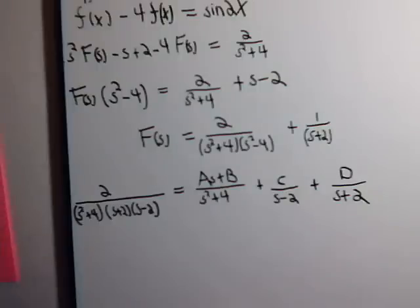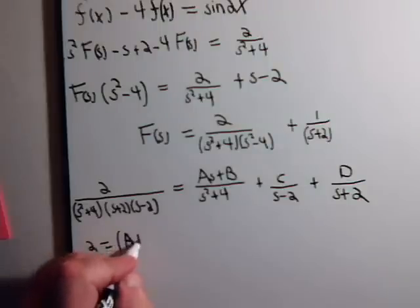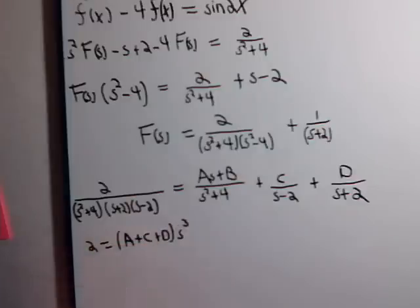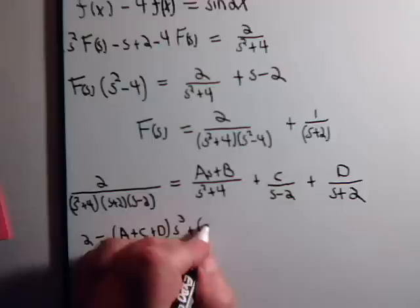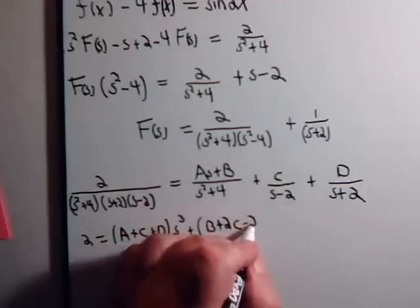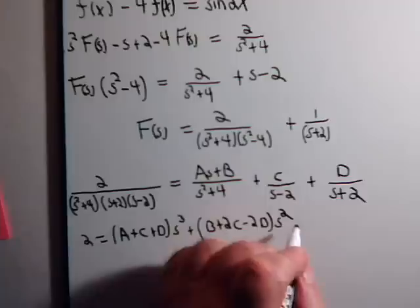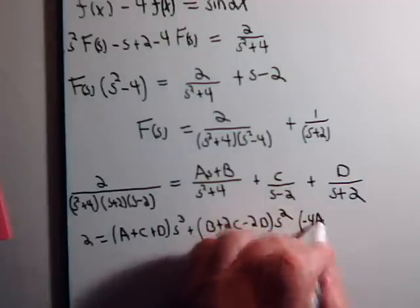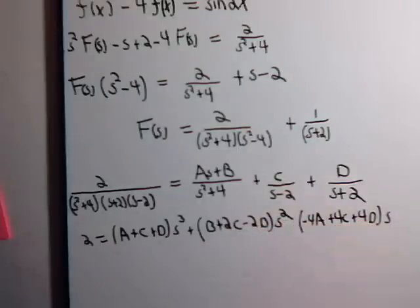And we have to solve for these four unknowns right now. So multiply both sides of the equation by this, and then collect like terms. And we have to do that. And when you do, 2 equals a plus c plus d times s cubed, plus b plus 2c minus 2 times d times s squared, and for the s term there is minus 4a and then plus 4c plus 4 times d times s, and then for the constants there's minus 4b and there's plus 8c minus 8 times d.